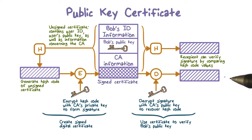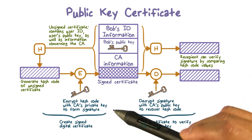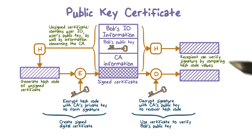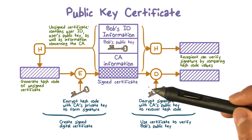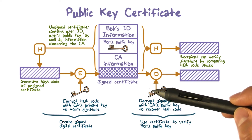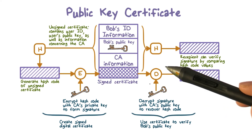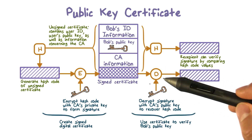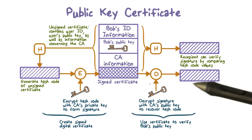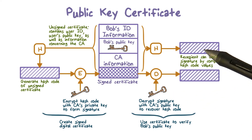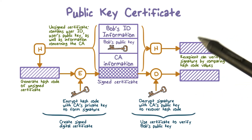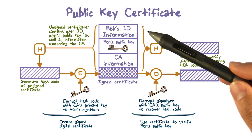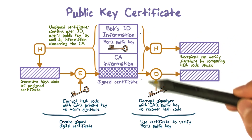Of course, the underlying assumption is that the CA is a trusted party by everybody involved. In practice, the CA is a well-known company such as VeriSign, Microsoft, Google, or Apple. Their public keys are already stored in, for example, your web browser. With these public keys already configured on your system, they can automatically validate public key certificates signed by these entities.